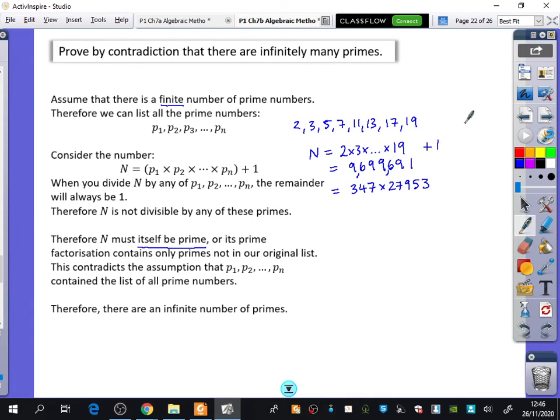If you type 9,699,691 into your calculator, press equals, then press shift and fact which is the comma button, it breaks it down into its prime factors for you. You can see what's actually happening with the numbers.